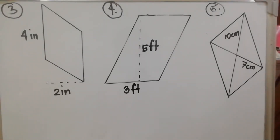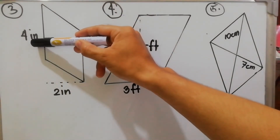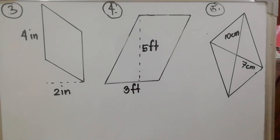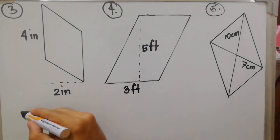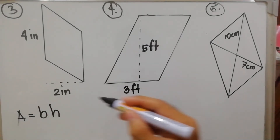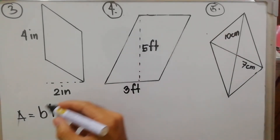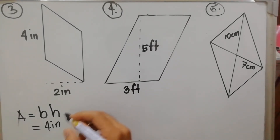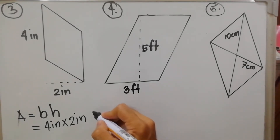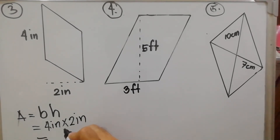Example number three: base equals four inches and height is two inches. Area = base × height = 4 × 2 = 8 square inches.